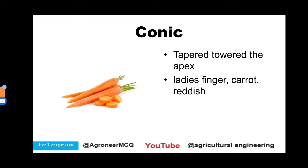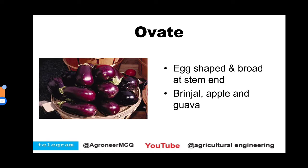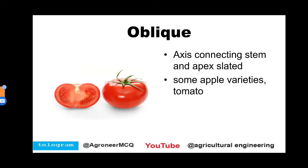Conic shape, as its name indicates, is similar to a cone and tapered towards the apex. Examples of conic shape are lady's finger, carrot, and radish. Ovate shape is similar to egg shape but broad at the stem end. Examples of ovate shape are brinjal, apple, and guava.